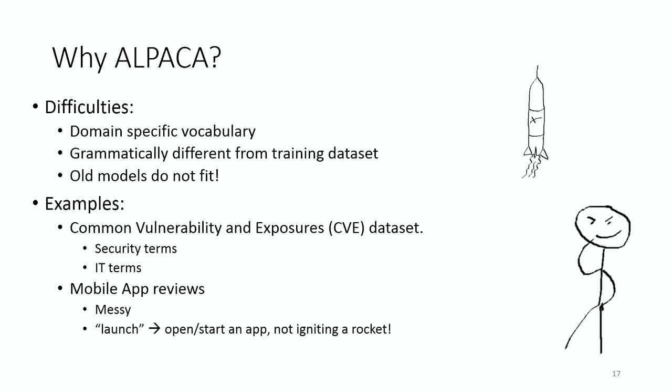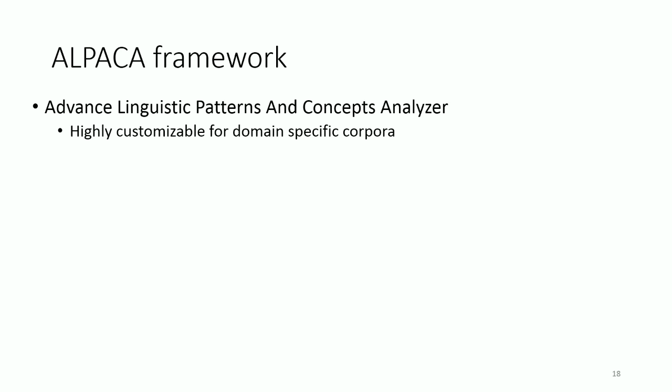Therefore, to apply performance tools on a domain-specific corpus, we often have to add new vocabulary, new scoring schemas, or even retrain the models, which is sometimes difficult due to a lack of labeled data. The Alpaca framework is designed to address those problems by introducing a highly customizable approach to preprocessing, topic expansion, and trend analysis.